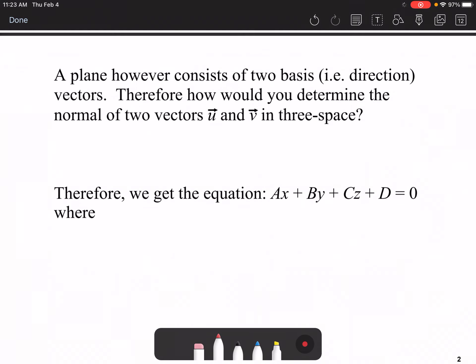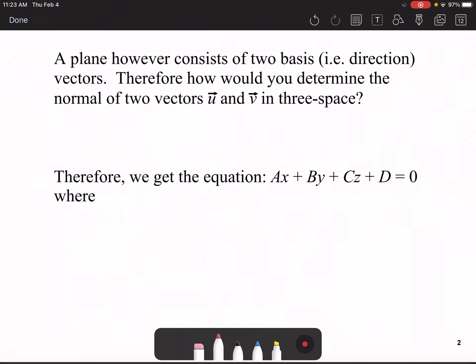If you can remember, the plane consists of two basis vectors. To determine the normal between those two basis vectors, let's call these two basis vectors U and V. You're going to only take the cross product of these two vectors. So this requires you to remember how to do a cross product. Once you have that cross product, you state that first piece as A, second piece as B, and third piece as C.